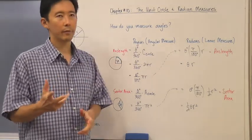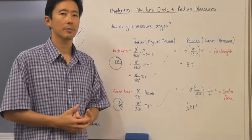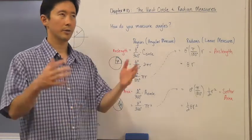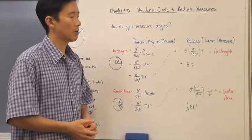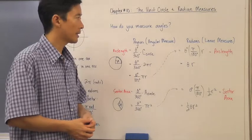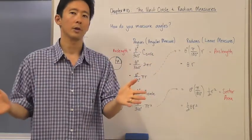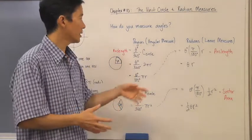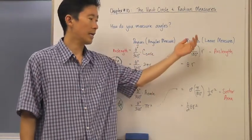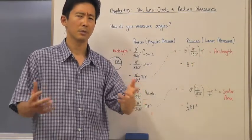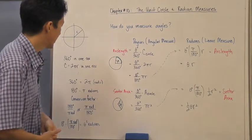Now, there's one way that we've always been familiar with, which is degrees — that is going to be an angular measure, so for example 45 degrees. But then we're also going to have something called radians. The difference between the degree and the radian, although they both measure angles, is that one is considered an angular measure versus the other, which is considered a linear measure.